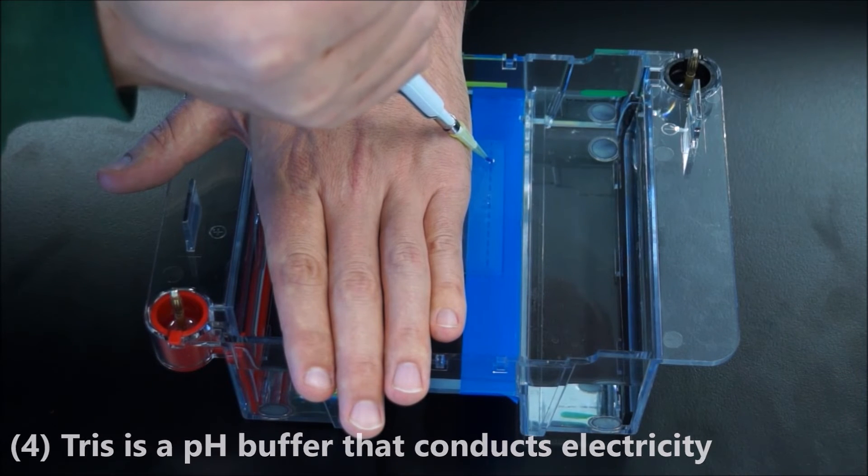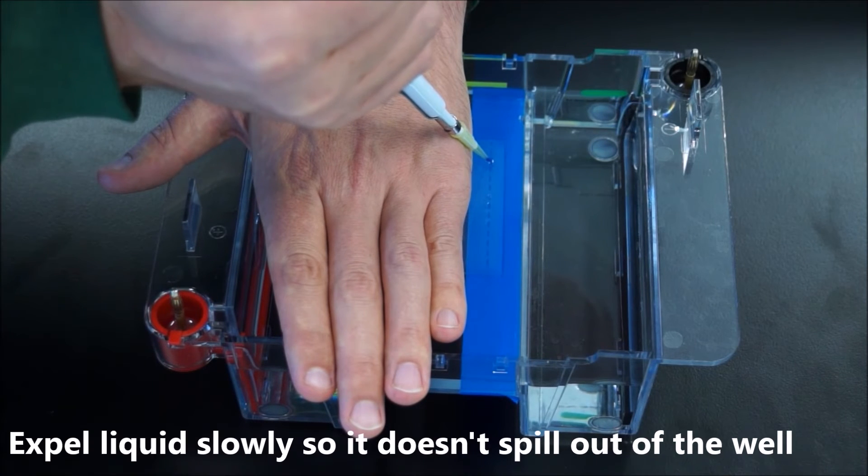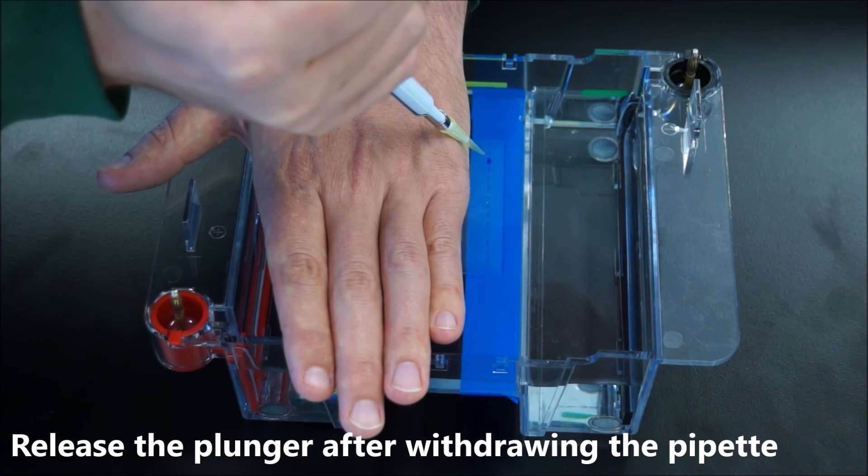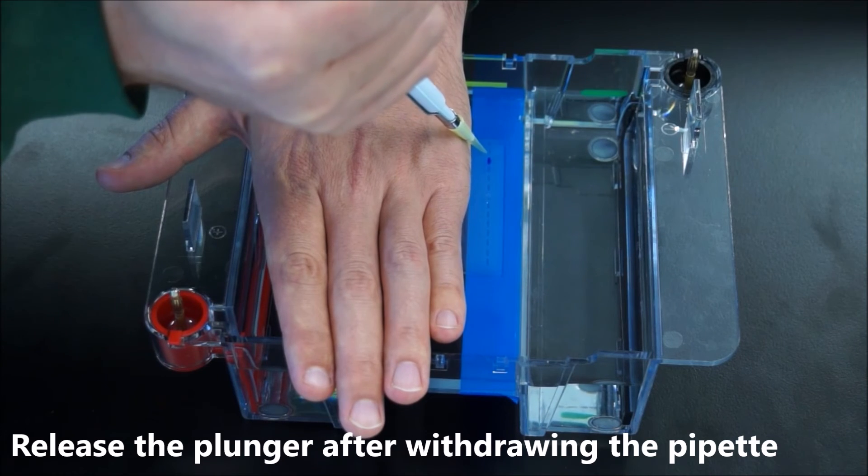Now when you expel the liquid, make sure you do it slowly. If you do it too quickly, it will force liquid up and out of the well. Once you have delivered all of the liquid, pull the tip out and then release your thumb off the plunger.